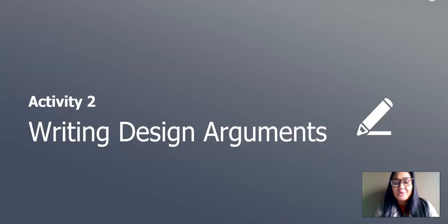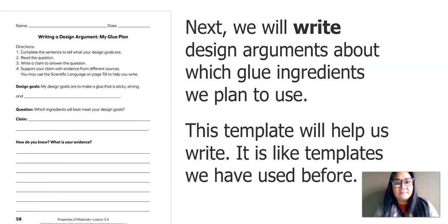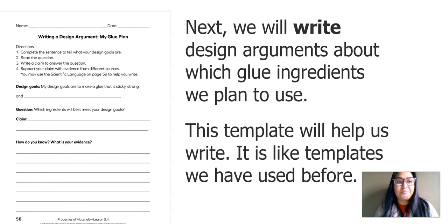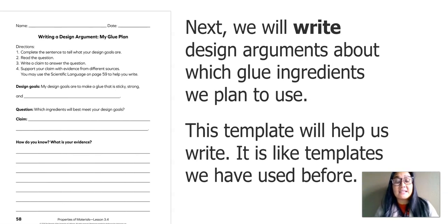In this next activity, we will write a design argument about which glue ingredients we plan to use. This template will help us write — it's something we've used before, so you can take it out of your packet. It's called Writing a Design Argument: My Glue Plan. If you don't have this in your packet, go ahead and get some paper and something to write with, and we will go through this worksheet together.